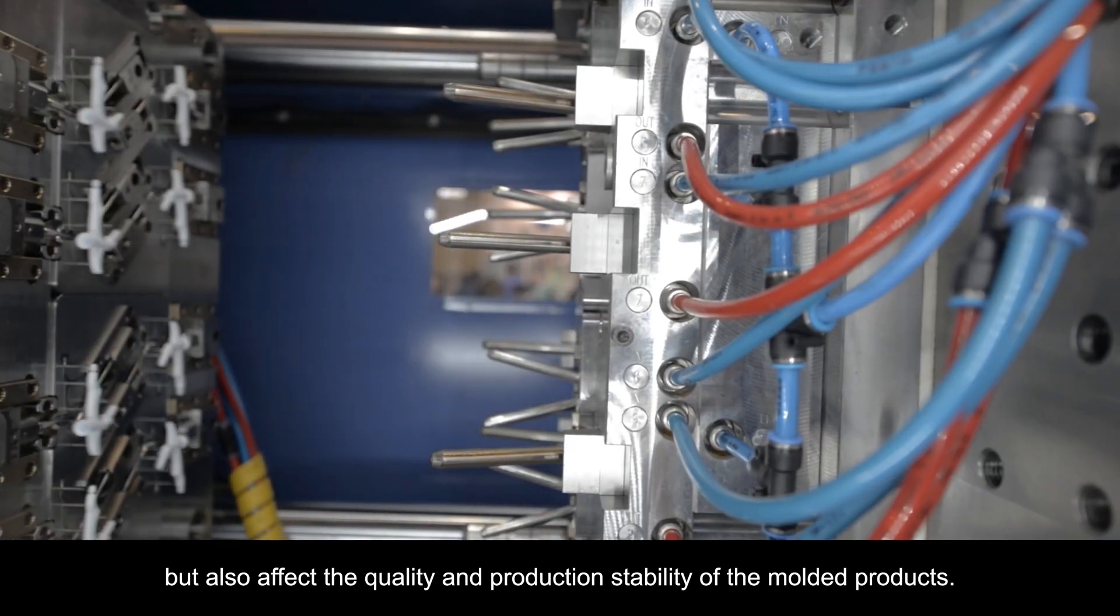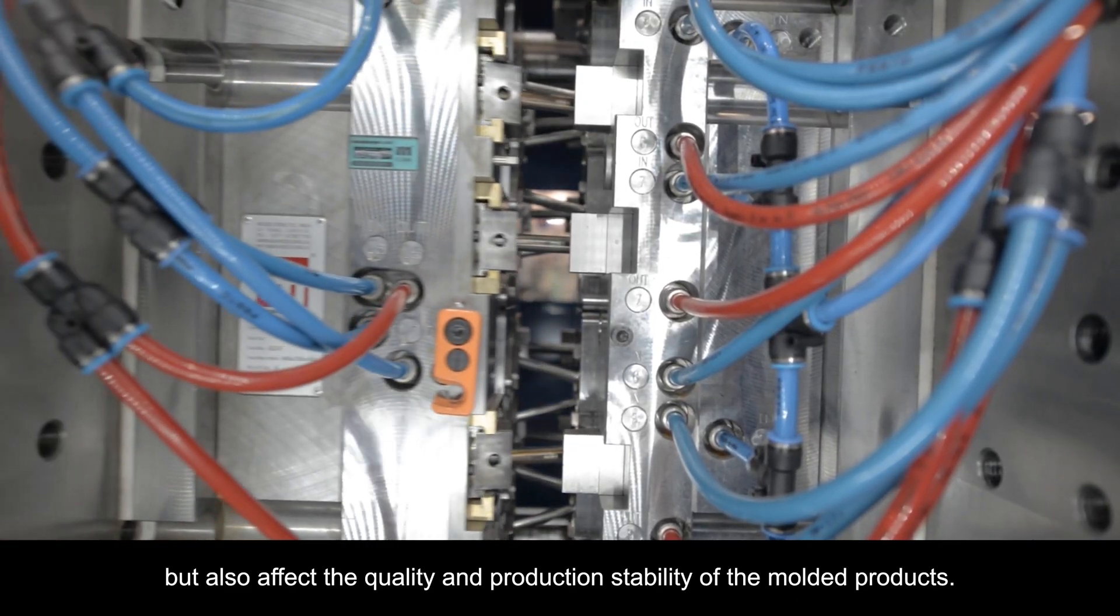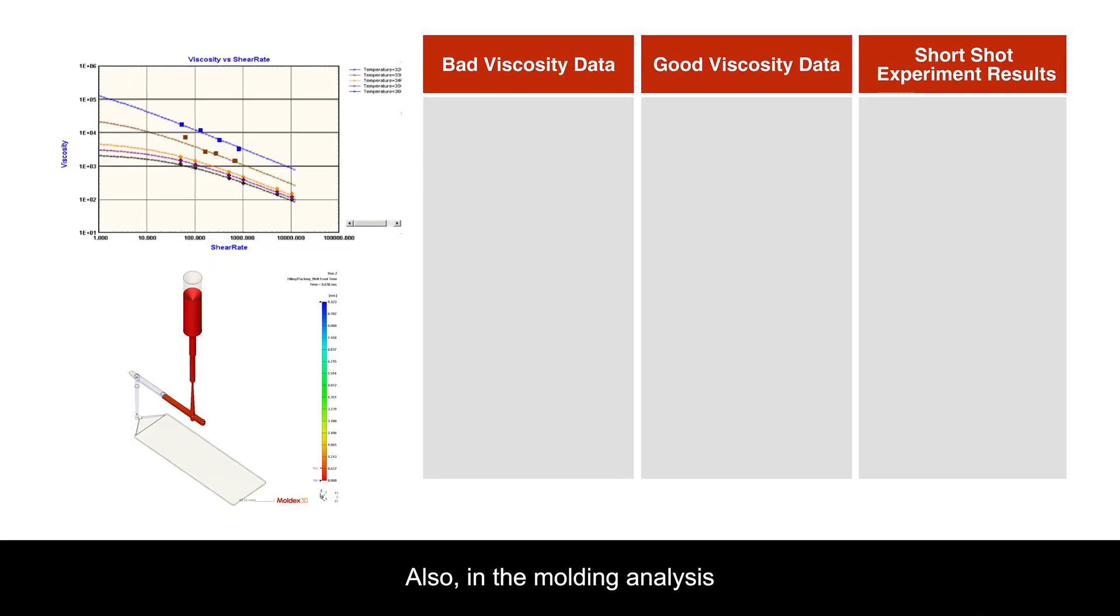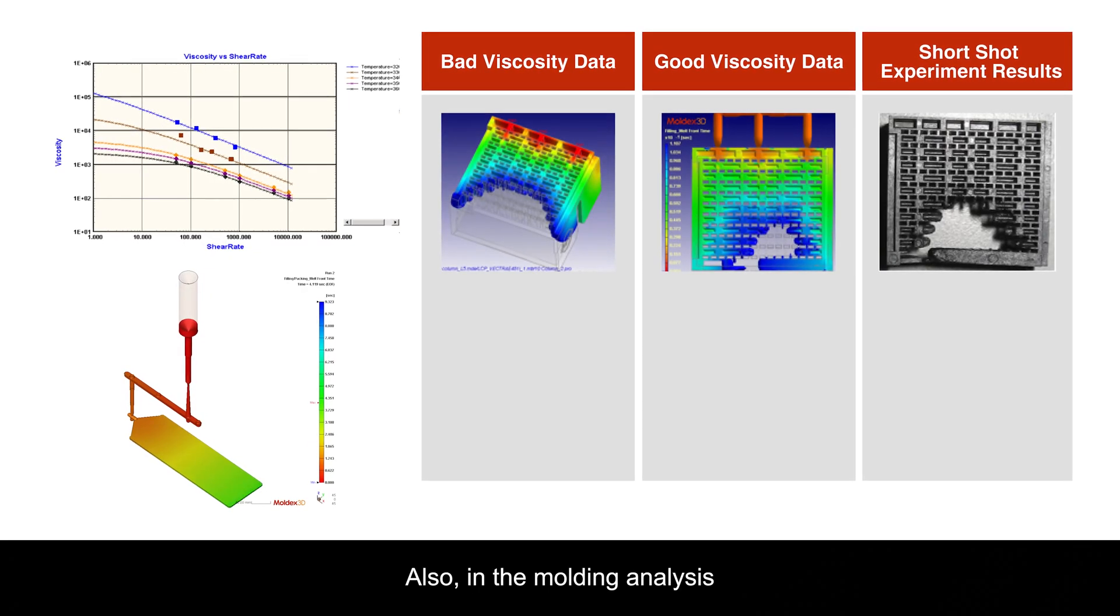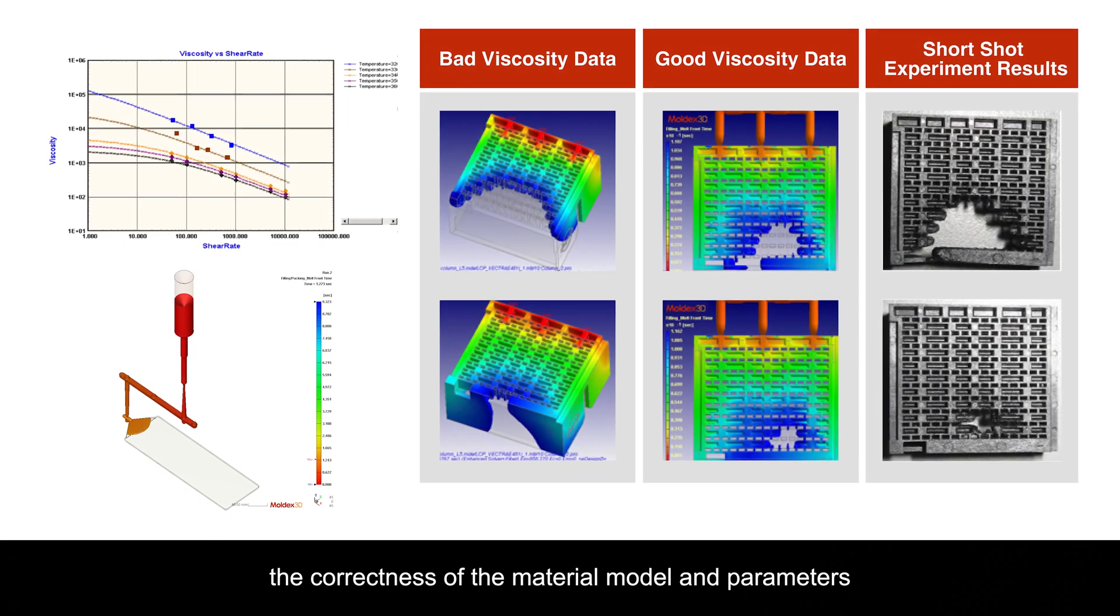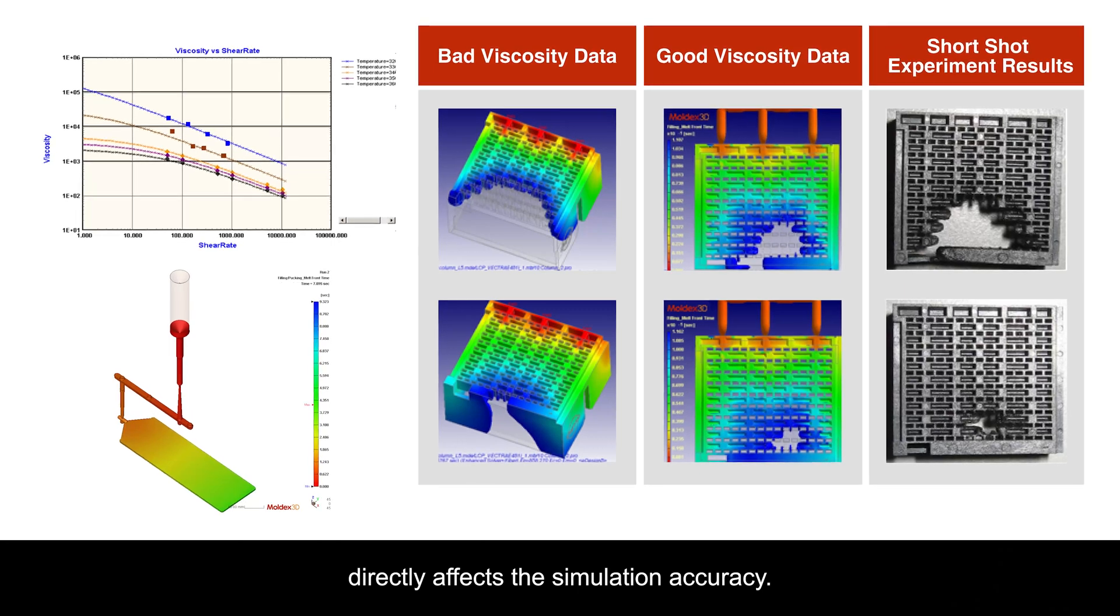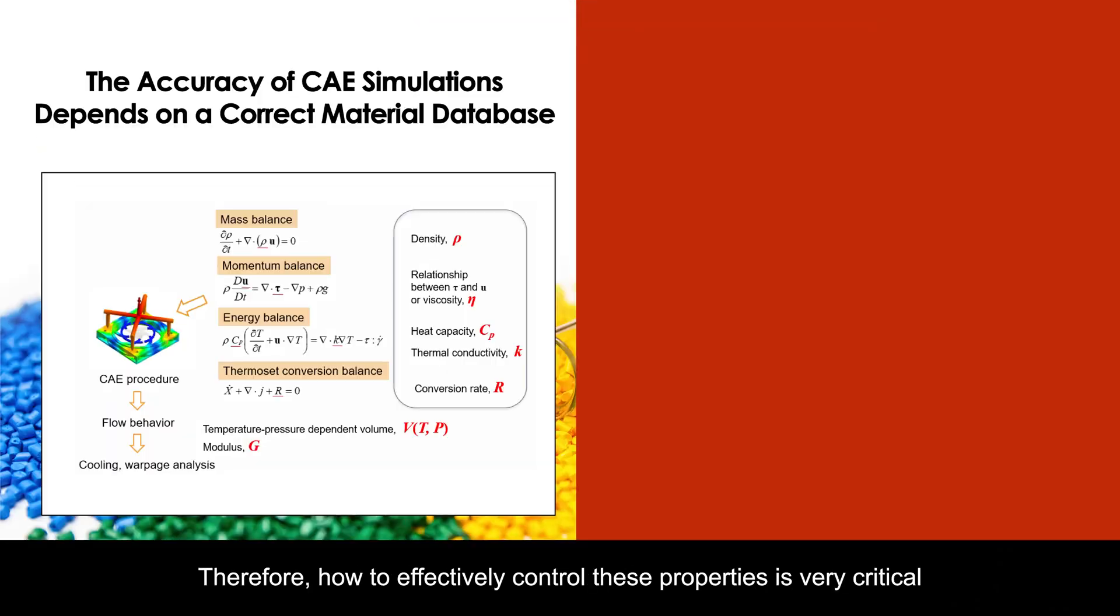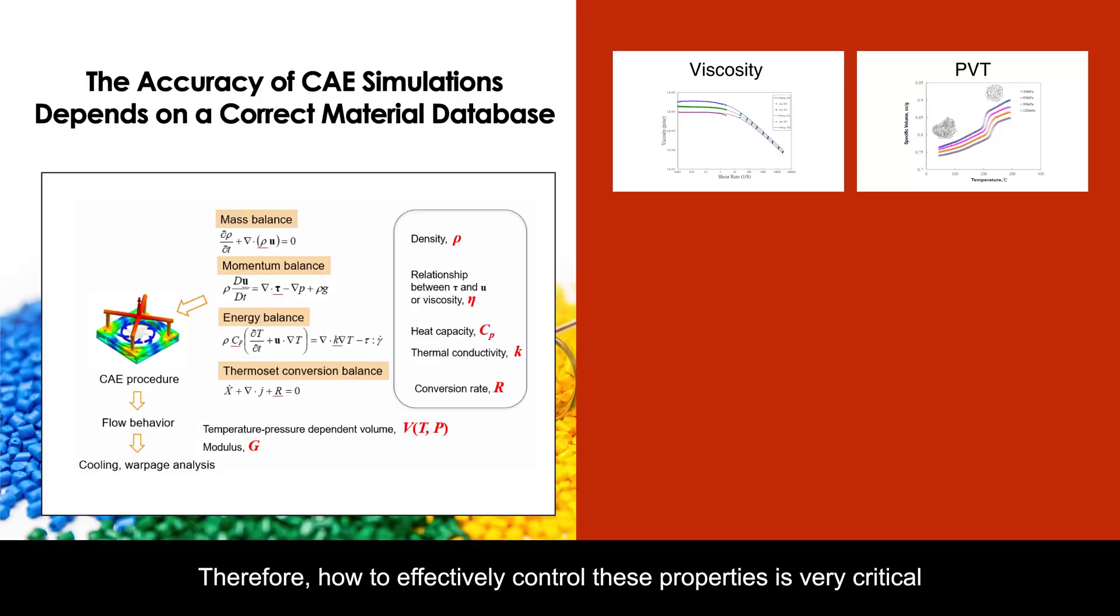of the product, but also affect the quality and production stability of molded products. In molding analysis, the correctness of the material model and parameters directly affects simulation accuracy. Therefore, how to effectively control these properties